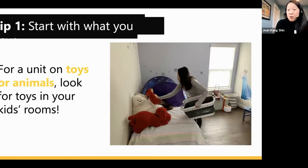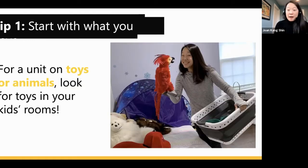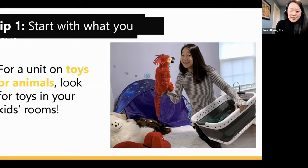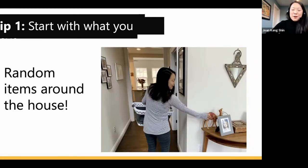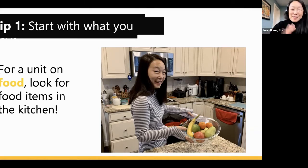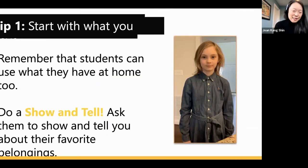Start collecting your objects. If you have a unit on toys or animals, look for toys in your kid's room. I found a bird from Harry Potter and thought I can use this in class. I also found a camel I got on a trip working with teachers in Libya. For a unit on food, look for items in the kitchen — there are tons of things.